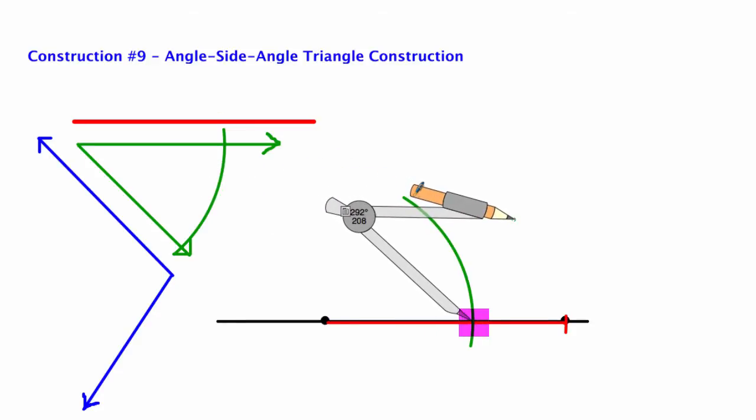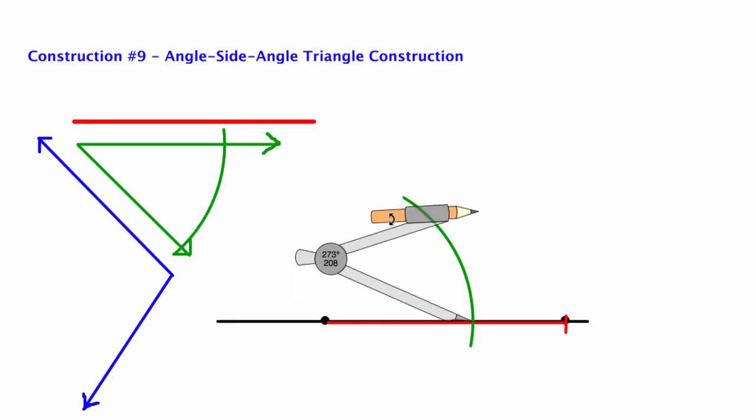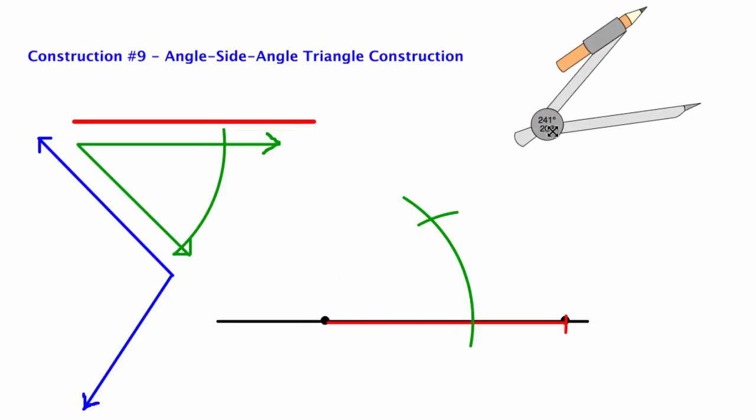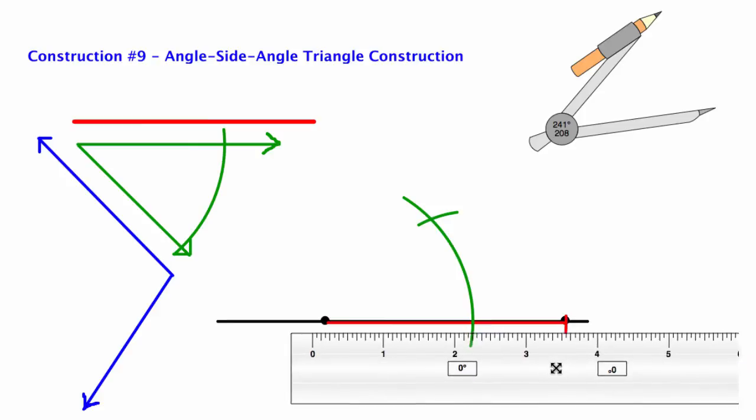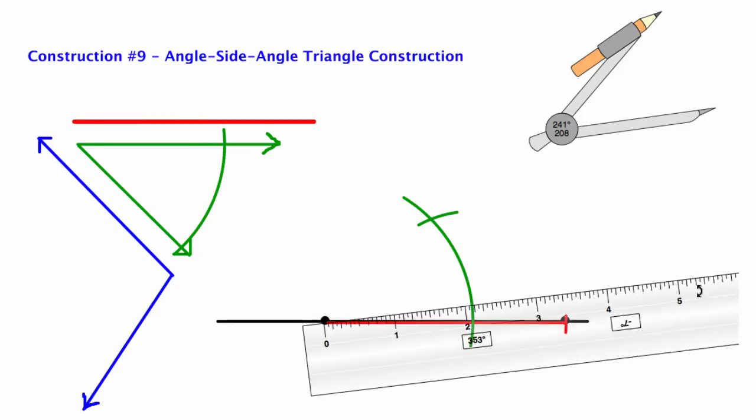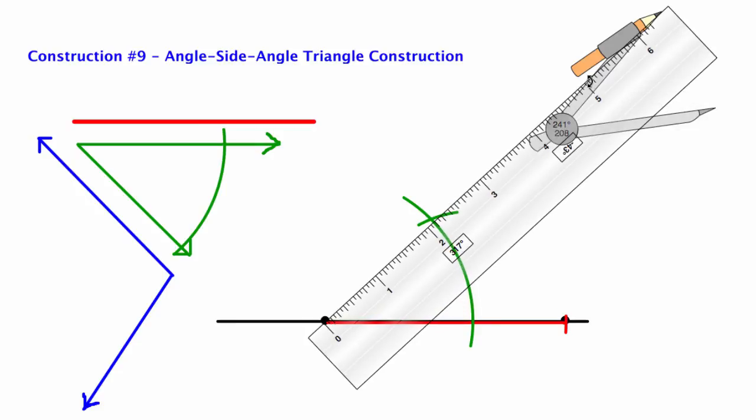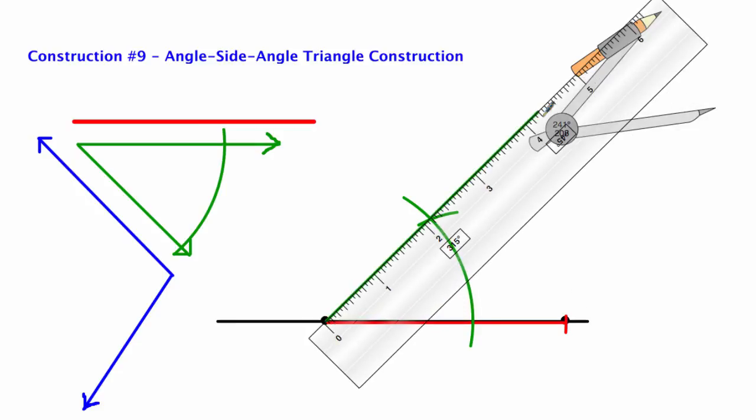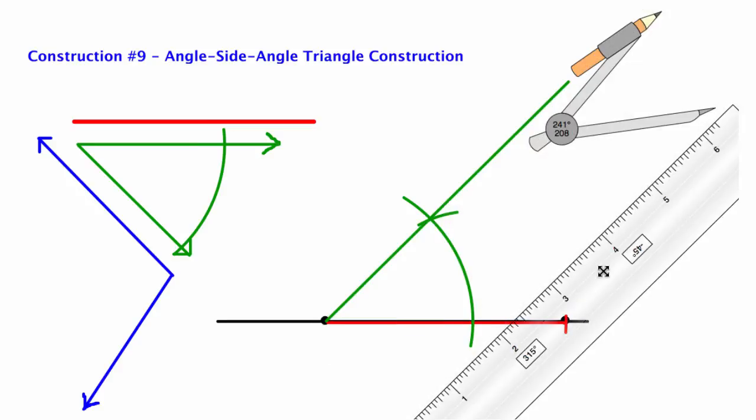It helps to have a sharp pencil. Come over to my construction and on that arc I'm going to swing a little mark here to find out where it crosses. Through two points, there's exactly one line that can be drawn. Now I have my second point and this is the angle. I don't know the side yet, but I know the angle.